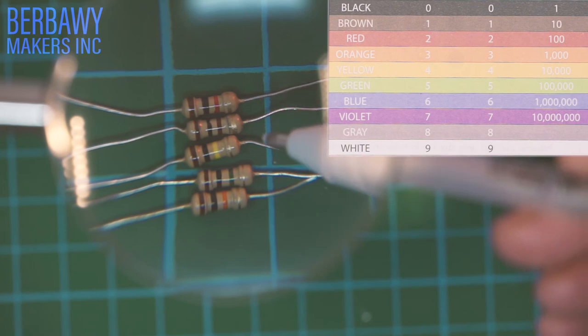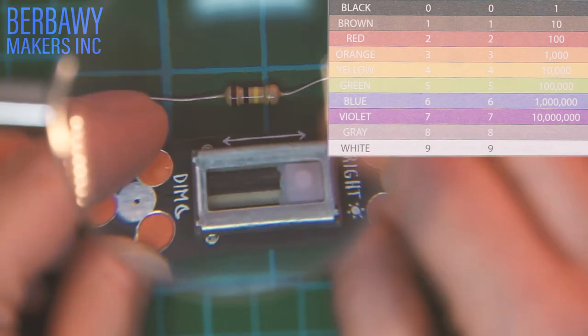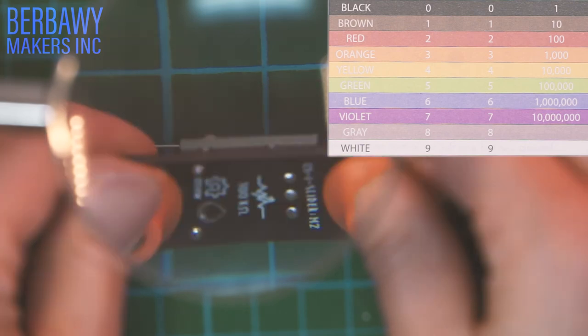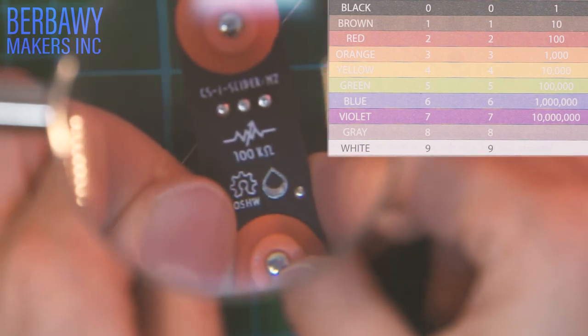The resistor sitting in the middle has a third band that is yellow. Yellow stands for four. So 10 times 10 to the fourth, or 10 times 10,000, is a hundred thousand. So that's a hundred thousand ohms, or 100 kilo-ohms. Our 100 kilo-ohm resistor is equivalent to the dimmest setting on our slider switch. We can see on the back that it says 100 kilo-ohms.